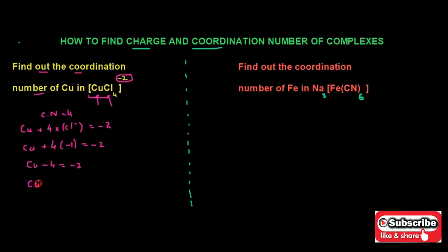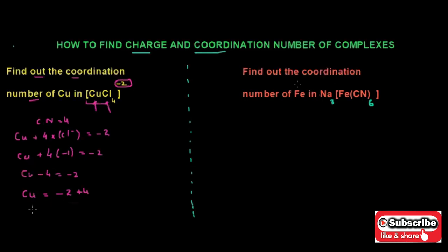Now we need the charge for copper. This minus four moves to the right side, so its sign reverses. We have minus two plus four, giving us plus two. Hence we can say that the charge on the central metal ion copper is plus two.